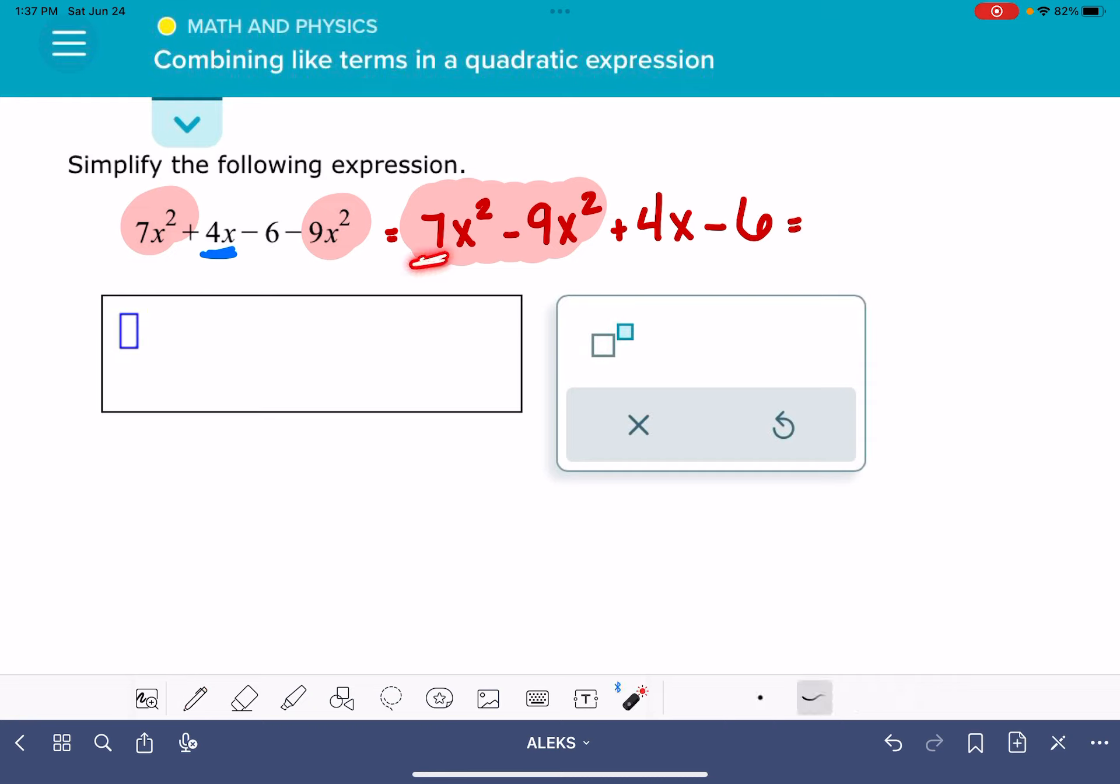We do that just by simply adding the numbers associated with those terms. So we're taking 7, and then we are adding negative 9 or 7 and subtracting 9, however your brain likes to think about it. So that gives us negative 2, 7 minus 9 is negative 2, negative 2x squared plus 4x minus 6.